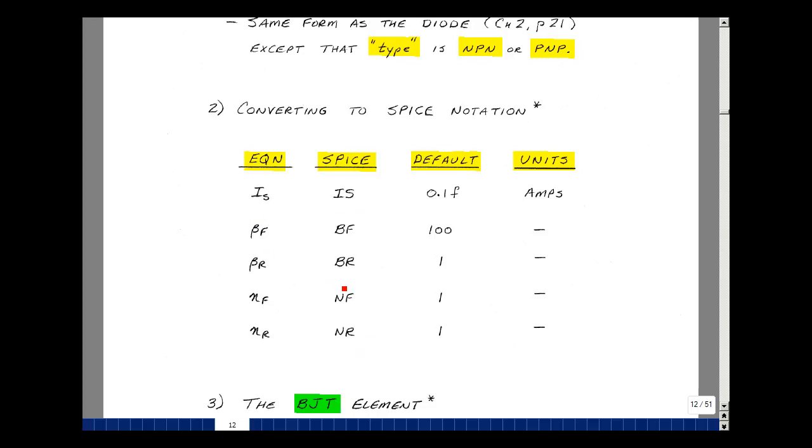Eta F, NF, eta R, NR. The default value of I sub S is 0.1 femto amps, which is appropriate for an integrated circuit transistor, but would be a little bit larger for a discrete transistor. Beta F is defaulted to 100, beta R to 1.